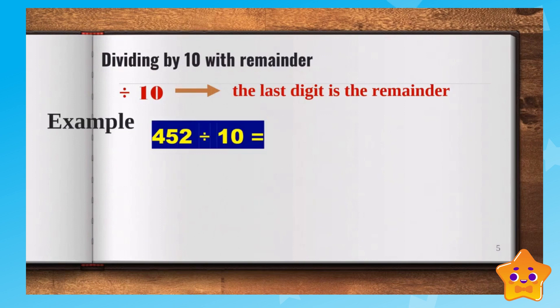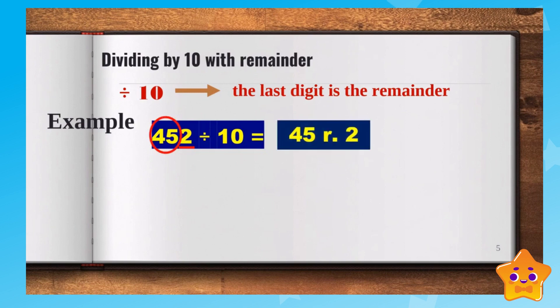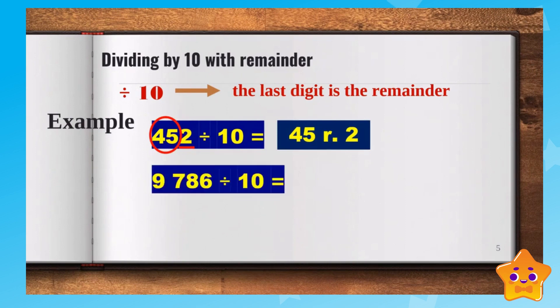For example, 452 divided by ten: the last digit is two, and that will be our remainder. The remaining digits, forty-five, are our quotient. So, 452 divided by ten equals forty-five remainder two.